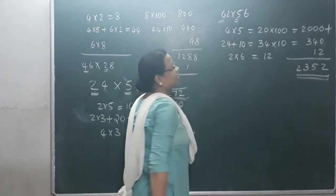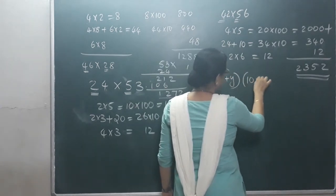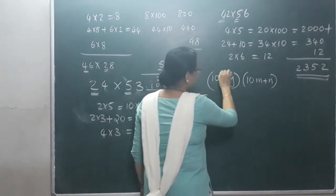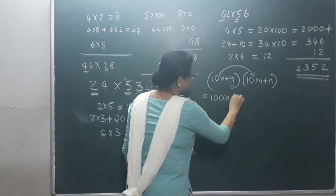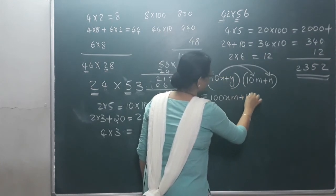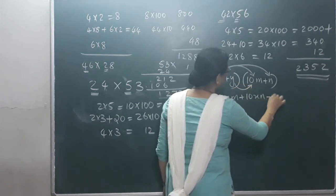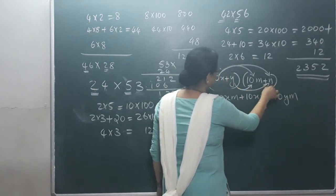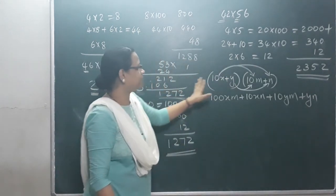Now let's express this algebraically. We represent the two-digit numbers as 10x plus y and 10m plus n. We multiply these out: here we get 100xm. Now we expand this — I put this expansion here. Here is 100: we multiply the two numbers in the hundreds entries and multiply by 100. That's why we are here.